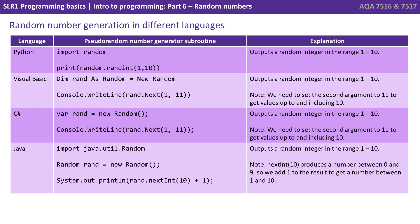There are different ways of generating random numbers in different languages. Depending on the language you're studying, you'll need to make sure you know that. We've got some examples on the screen here of how you generate random numbers in Python, Visual Basic, C Sharp and Java. It's worth noting that in some of these languages, there are multiple or different ways of generating random numbers. We've just shown you here a typical way of generating a random number in each of those languages.